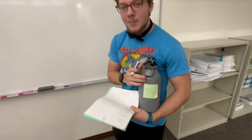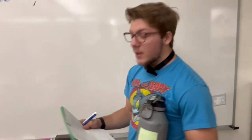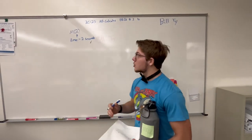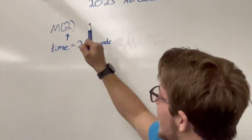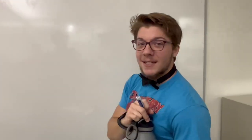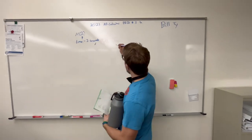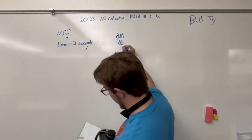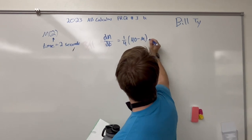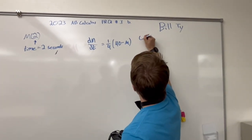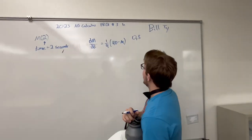This problem is all about the milk and the temperature as it heats up as we put it in warm water. Question B is asking for the temperature at time t equals 2. M of 2 is what we are finding. We are given that dm/dt equals one-fourth of (40 minus m), and we are also given the initial condition: the point (0, 5).